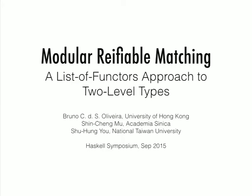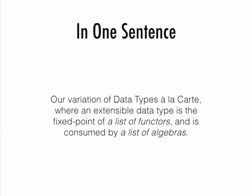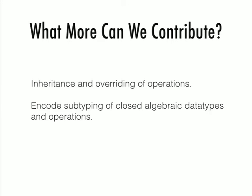Good afternoon. I'd like to talk to you about modular reifiable matching, which in one sentence is our variation of data types a la carte, which uses a list of functors instead of one functor, and the data type will be processed by a list of algebras rather than one algebra. Our work seems to be very relevant - it's another variation to the variations. Data types a la carte is considered by many people to be one of the best solutions to the expression problem. So what more can we offer on top of that?